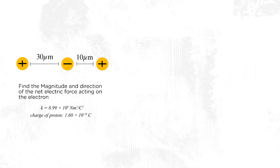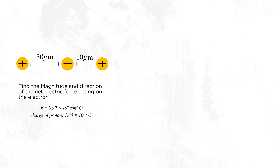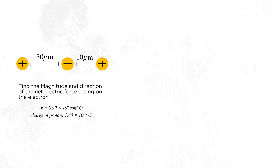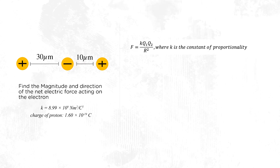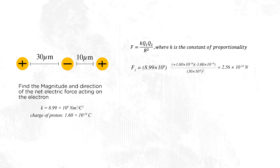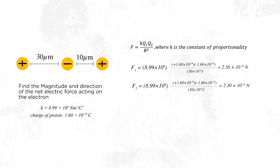Consider this example: two protons are on either side of an electron. The electron is 30 micrometers away from the proton on its left and 10 micrometers away from the proton on its right. What is the magnitude and direction of the net electric force acting on the electron? The net force on the electron is the sum of the forces between the electron and each proton — that's F1 plus F2. Using Coulomb's law, F equals k times Q1 Q2 divided by r squared, substituting the respective values gives F1 as 2.56 times 10 to the power minus 19 newtons and F2 as 2.3 times 10 to the power minus 18 newtons.